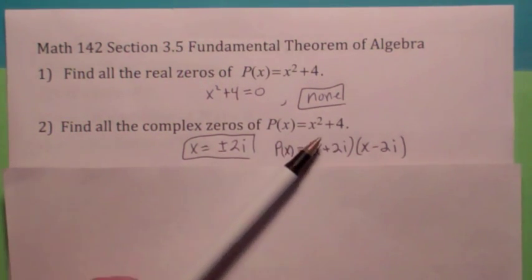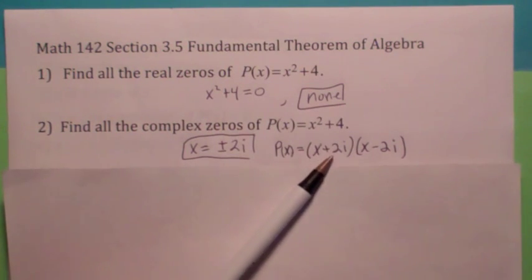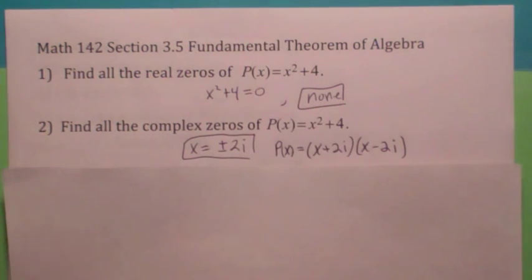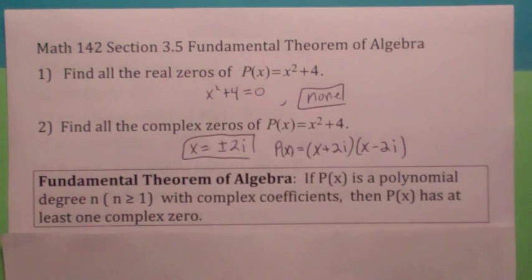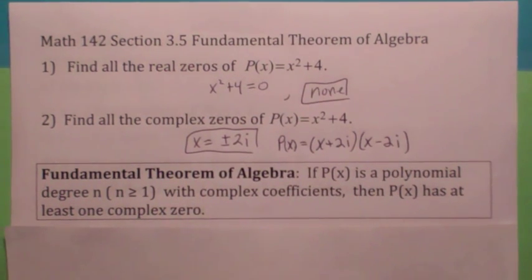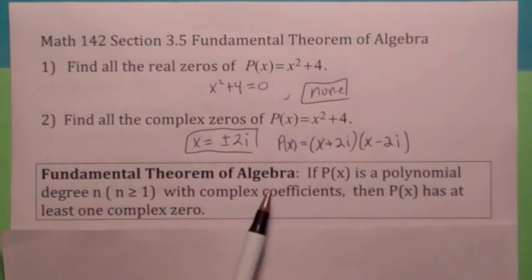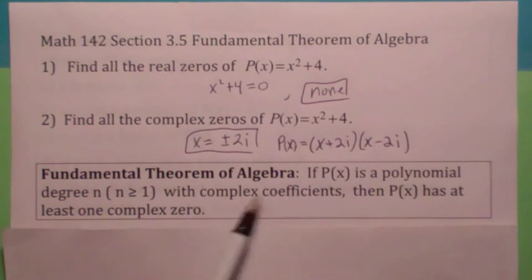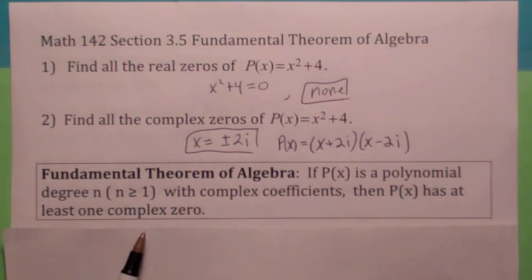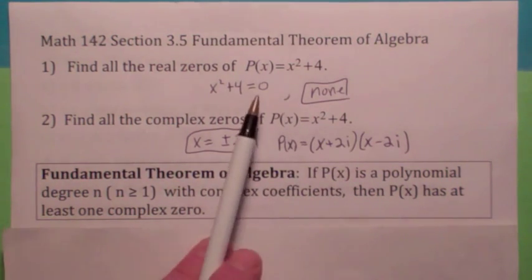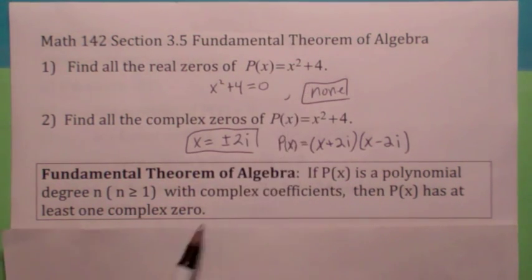In fact, couldn't you factor this polynomial function as x plus 2i times x minus 2i? And that's basically what the fundamental theorem of algebra says. It says if you have a polynomial function of degree n — and you're even going to allow complex coefficients, although in most cases on our homework we have real coefficients — all it says is that polynomial has to have at least one complex zero. It does not say it has to have a real zero. Notice here, this one doesn't have any real zeros.